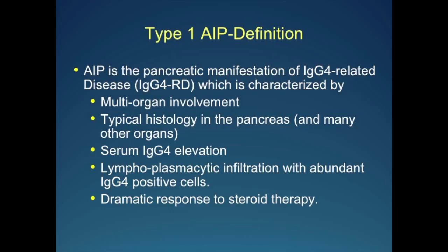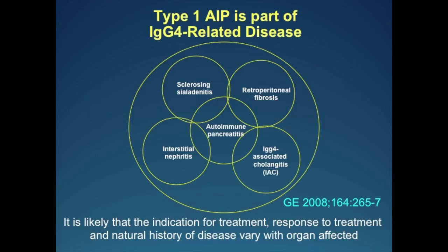IgG4-RD is characterized by these features here. If you take a cohort of IgG4-RD, there is clearly multi-organ involvement. There's typical histology in the pancreas and in many other organs, a very similar histology. There is characteristic, but not always present, IgG4 elevation, and there is this lymphoplasmacytic infiltrate which has abundant IgG4-positive cells. All the organs in the inflammatory phase dramatically respond to steroid therapy.